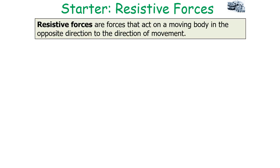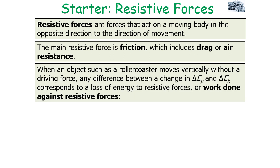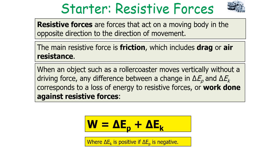Resistive forces act on a moving body in the opposite direction to movement. The main resistive force is friction, which can also include drag or air resistance. When an object such as a roller coaster moves vertically without a driving force, any difference between the gravitational potential energy and the kinetic energy corresponds to energy lost to resistive forces — the work done against resistive forces. We can say that work done against resistive forces equals the kinetic energy plus the gravitational potential energy (where GPE is taken as negative), so the difference between the two values is the work done against resistive forces.